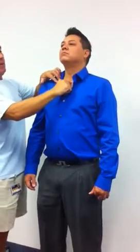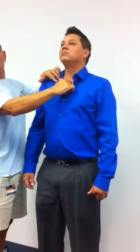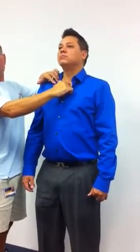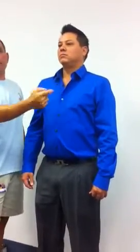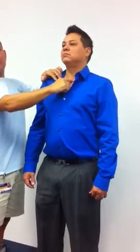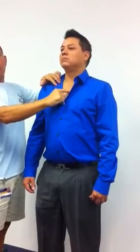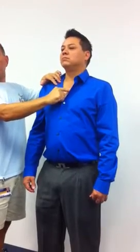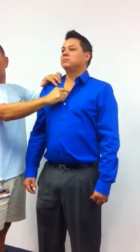Suprasternal notch — the suprasternal notch is right here at your sternum, that notch right here. Sternum is anywhere right here; just point to it and tell them that's your sternum. Sternal angle: you're going to start at the top where the notch is, and go to where that little hump is on your sternum — that's your sternal angle.